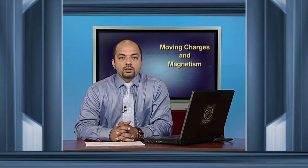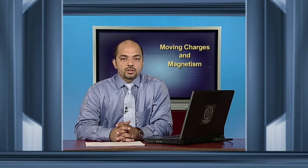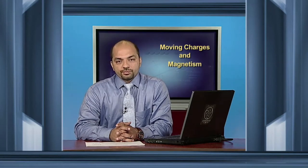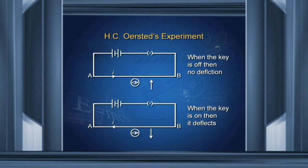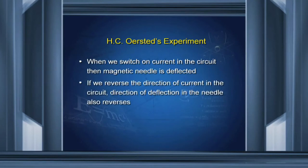But in 1820, Dr. H.C. Oersted performed an experiment. By his experiment, he established a relation between electricity and magnetism. There is a diagram which shows the direction of current and a magnetic needle kept close to it. When we switch on the current in the circuit, the magnetic needle is deflected. If we reverse the direction of current in the circuit, the direction of deflection in the needle also reverses.